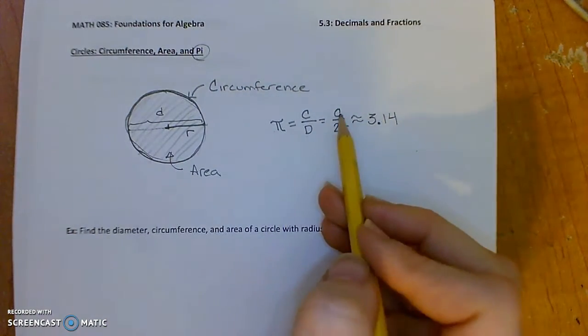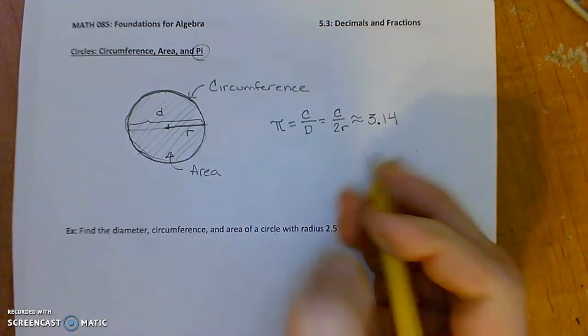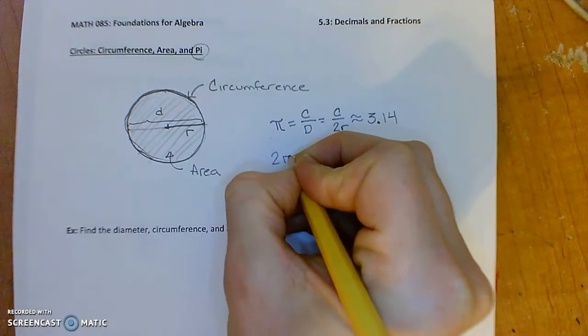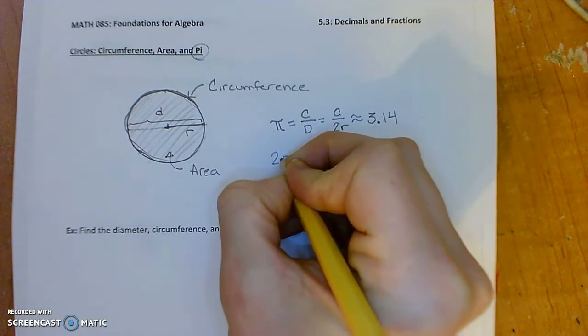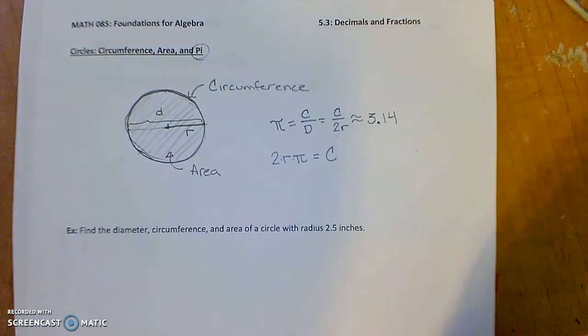So if you look at this, circumference divided by twice the radius is equal to pi. Multiply both sides by twice the radius, and what you get is 2 times r, which is the diameter, times pi is equal to the circumference C.